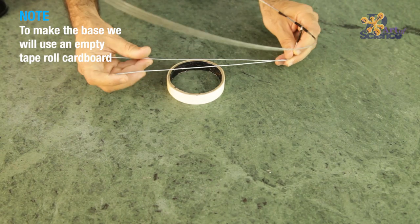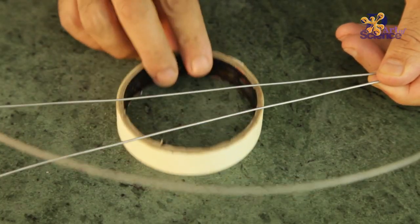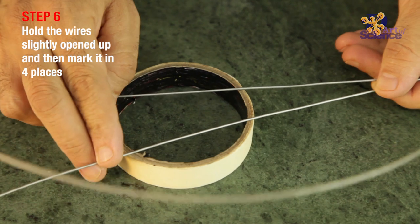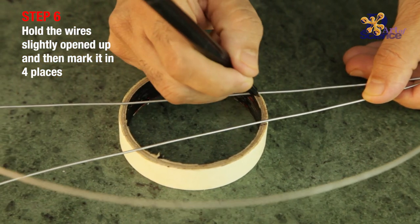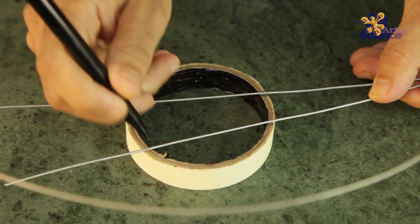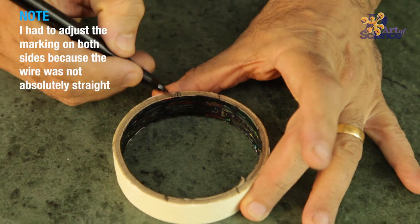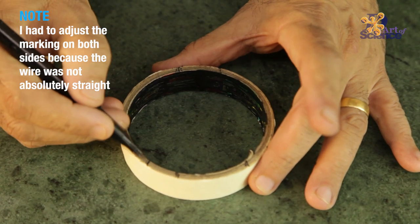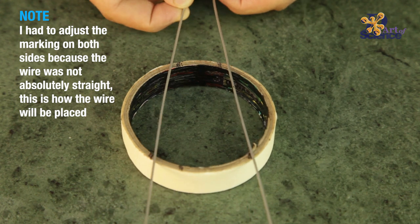Now we need to make a base, which can be done using the card roll of a used up tape. Hold the wire slightly opened up, and then mark it in 4 places as shown. Now I am adjusting the marking here, so that they are the same on either side, because the wire was not absolutely straight. This is how the wire will be placed.